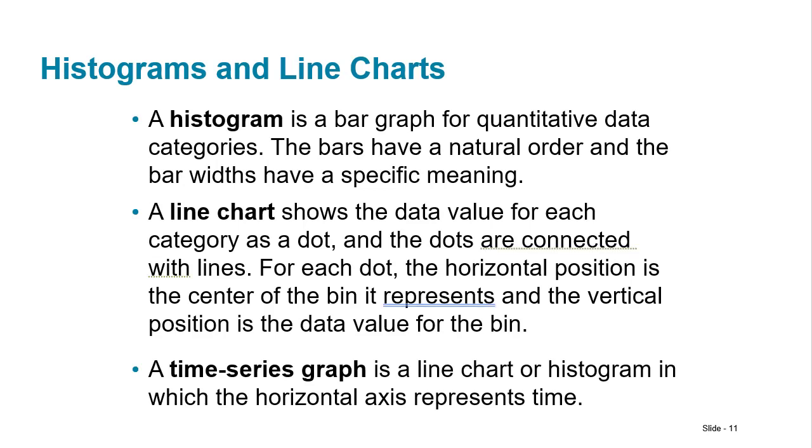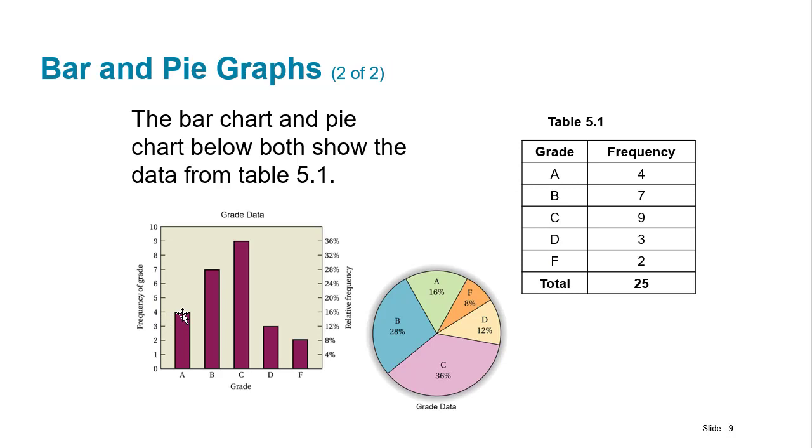A histogram is a bar graph for quantitative data that is either binned or is continuous. So the bars touch and there are no gaps in between them. And thus the widths of the bars have a meaning because it either represents the category or the width of your continuous data. A line chart shows the data value for each category as a dot and then the dots are connected with lines. For each dot the horizontal position is the center of the bin it represents and the vertical position is the data value for the bin. So basically if you tried to do it for something like this you would just put a dot here in the center and then the center and then the center and then you would connect those dots and that would be your line chart.